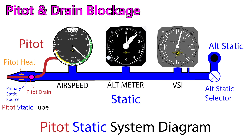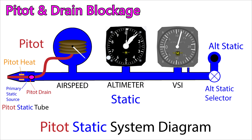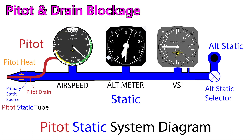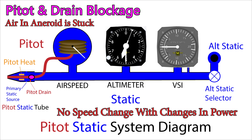With a blocked pitot tube and drain hole, your ASI will act somewhat like a vertical speed indicator, since the ASI depends on a difference between static and ram air pressures. The increase in altitude will cause the diaphragm to expand and show an increase in airspeed, which we know should not happen when you're climbing. The reverse is true for descents with the blocked pitot and drain port. If we make power adjustments and see no change in airspeed, then we can be certain that our pitot and drain holes are blocked. This is the only case where we will see the airspeed needle behave like this.